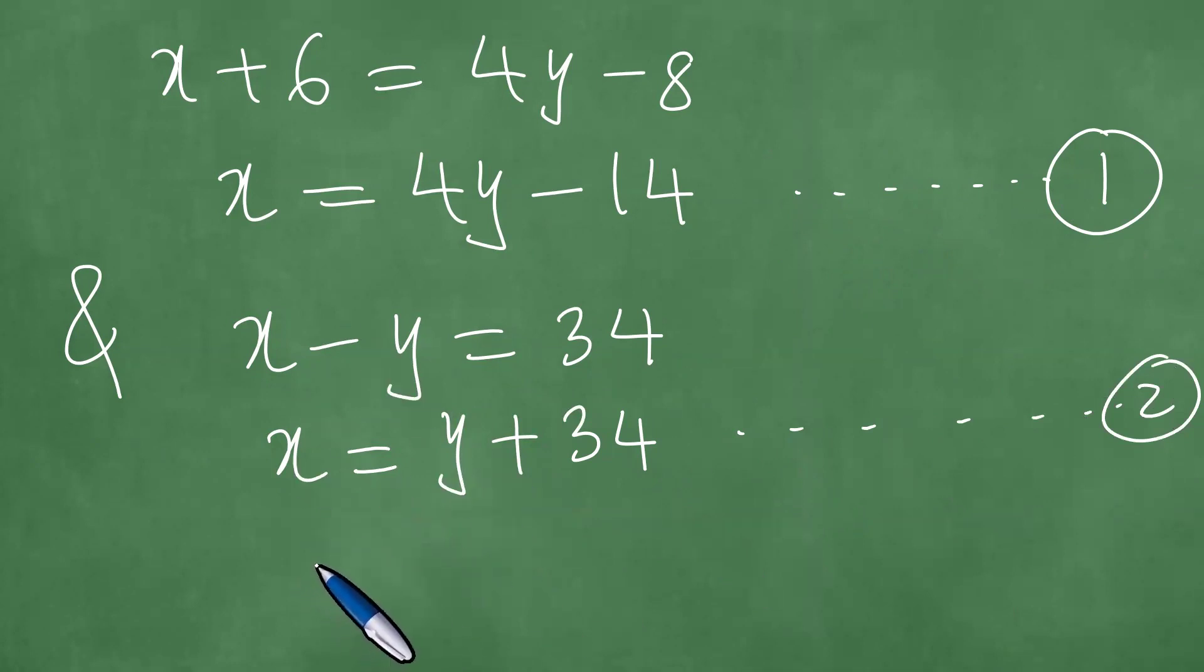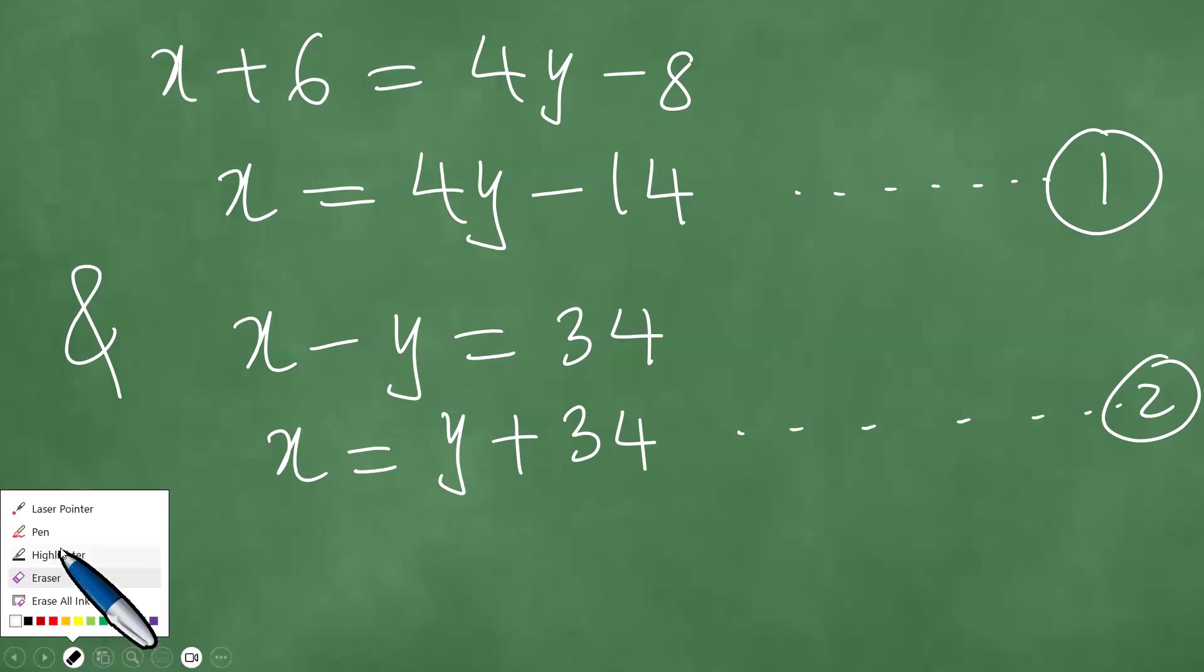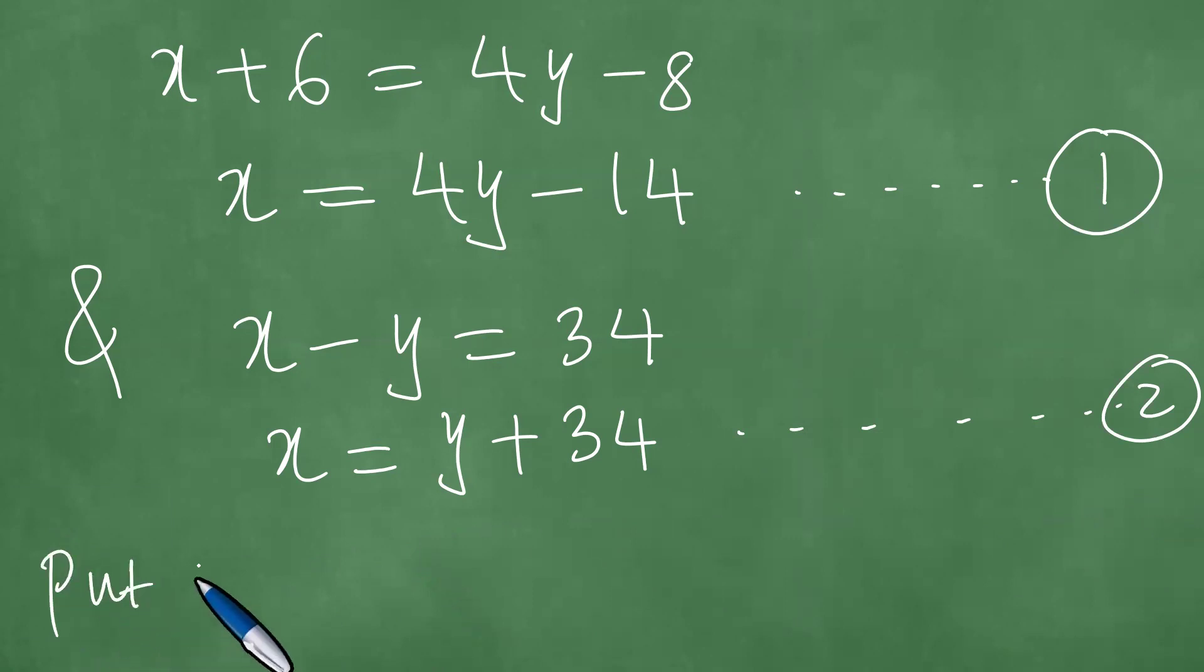These are the two equations. And if these are the two equations, we proceed to solve this in a step-by-step fashion. What we know is with equation one equals the second equation. You can use the word put or substitutes. Let's use that. Put one into two.